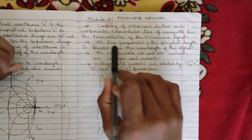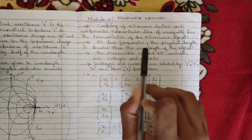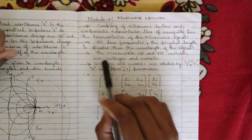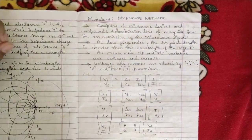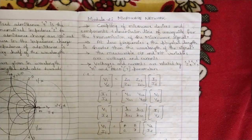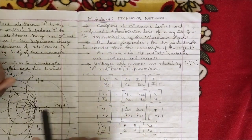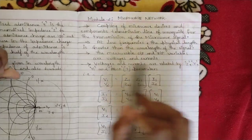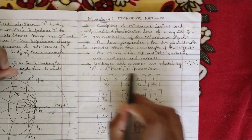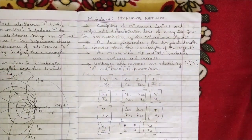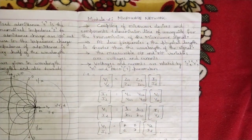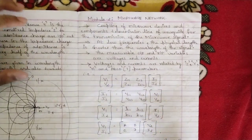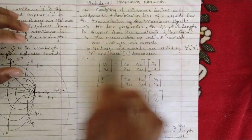At low frequencies, the physical length is shorter than the wavelength of the signal, and the measurable input and output variables are voltages and currents. The parameters we are going to discuss with respect to the microwave network are mainly considered for voltages and currents. Voltages and currents are related by Z, Y, H, and ABCD parameters — the different parameters you studied in network analysis.